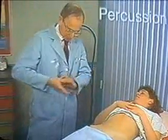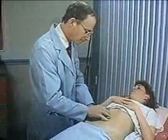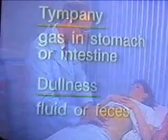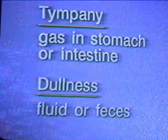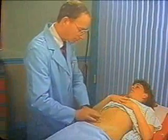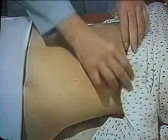Next, lightly percuss the abdomen to assess the distribution of tympani and dullness. Tympani indicates gas in the stomach or intestine. Dullness suggests fluid or feces. Note any large area of dullness that might suggest a mass or enlarged organ. Briefly percuss the lower anterior chest. On the right, liver dullness is usually present. On the left, you may hear the tympani of the gastric air bubble.